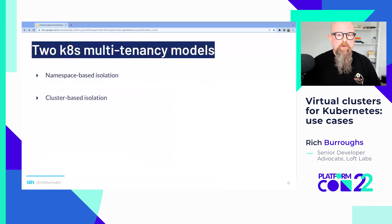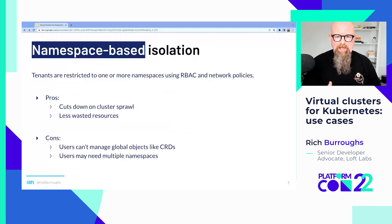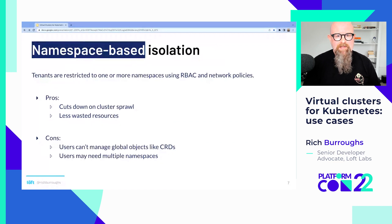In the past we've had two Kubernetes multi-tenancy models: namespace-based isolation and what we'll call cluster-based isolation. With namespace-based isolation, tenants are restricted to one or more namespaces using things like role-based access control and network policies. Some pros: since we're sharing clusters, we have less cluster sprawl and less wasted resources. But the cons: users locked down to a namespace can't manage global objects like custom resource definitions, which they might be developing alongside their applications. That's fine in production, but they should be able to in a dev environment and maybe even a test environment.